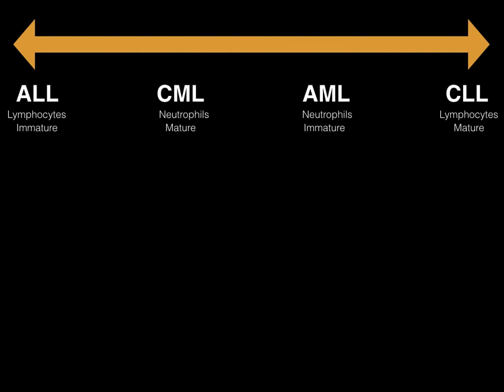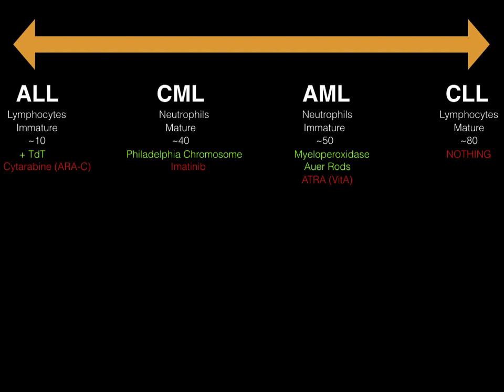Let's fill in the defining characteristics of each that you should know for Step 1. In ALL, cells will stain positive for TdT. In CML, you're going to have the Philadelphia chromosome — a translocation between chromosome 9 and 22. This is really high yield; they love dropping the Philadelphia chromosome or a translocation of 9-22 on the USMLE or COMLEX, so commit that to memory. AML is going to be myeloperoxidase positive and have Auer rods. CLL has no defining characteristic other than a massive abundance of lymphocytes.